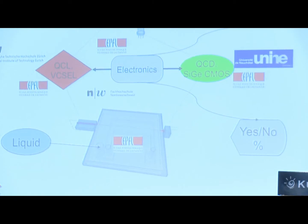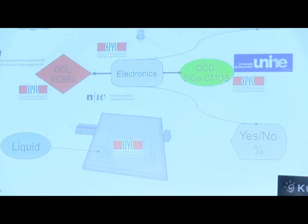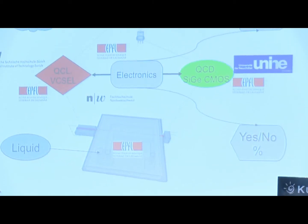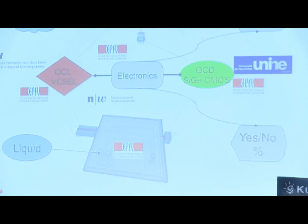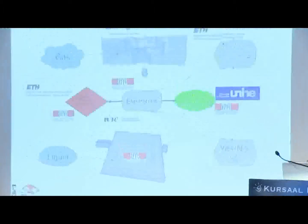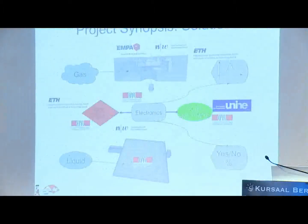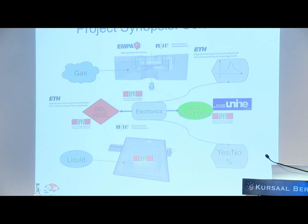For example, for gas sensing, EMPA has a key role, and the Fachhochschule has a key role. For the sources, it's ETH and EPFL. For the fluidic sensing, that's EPFL.